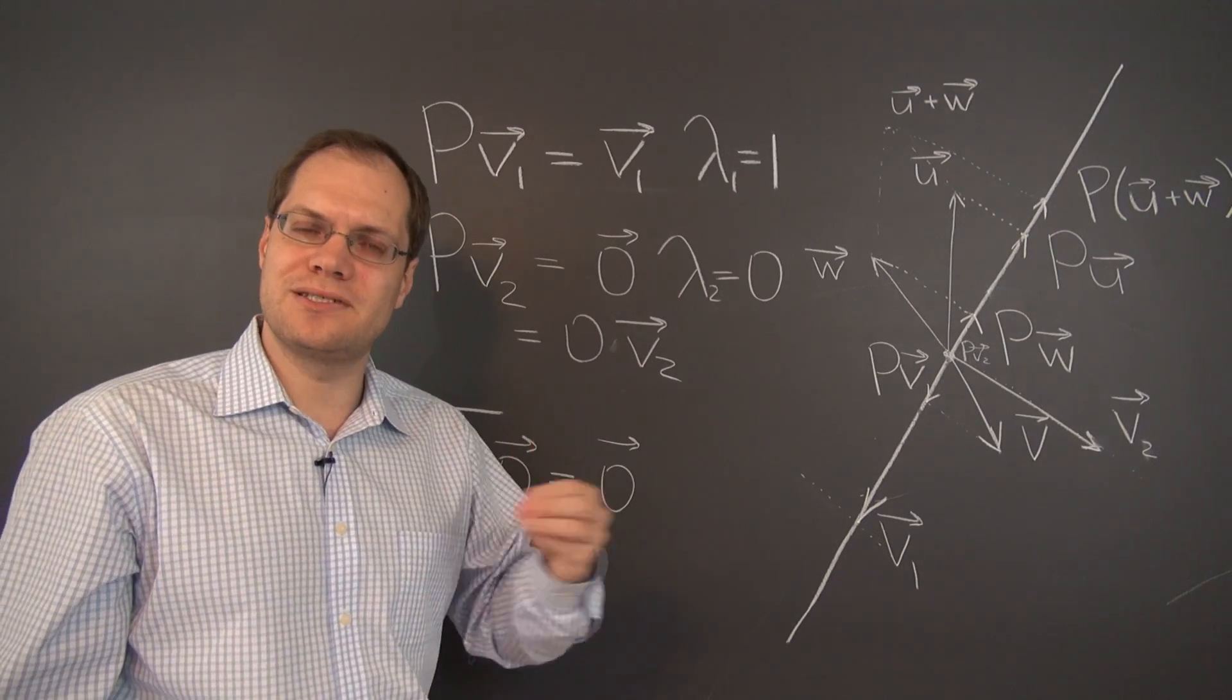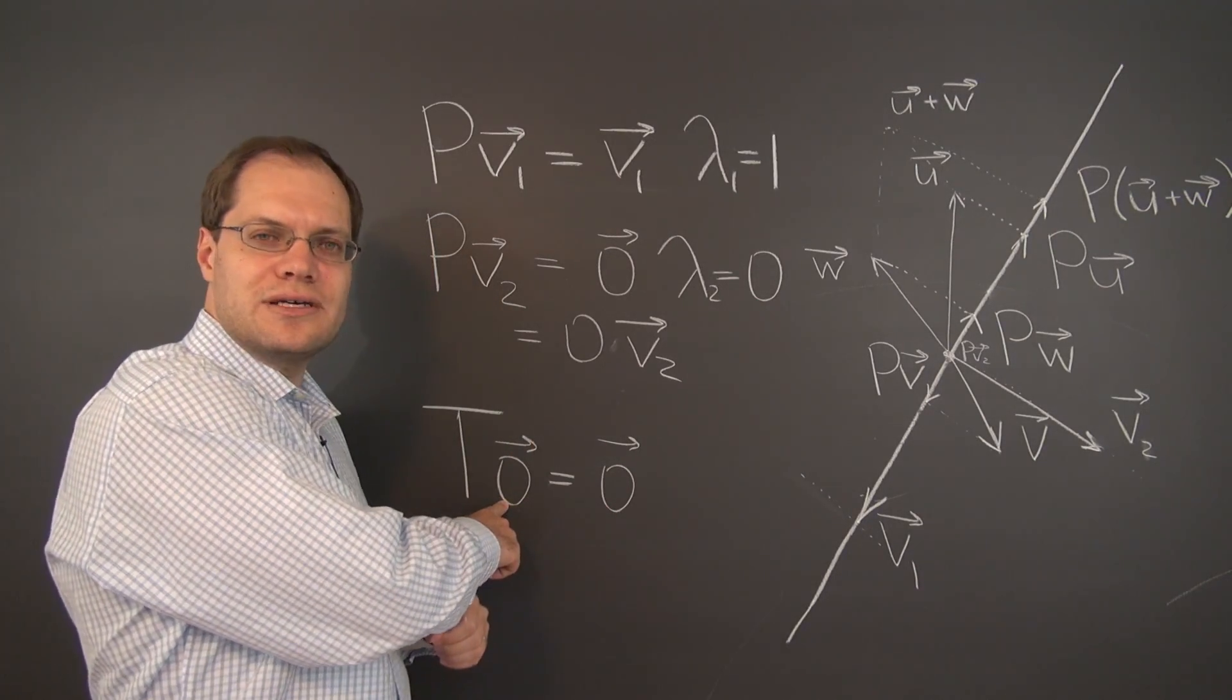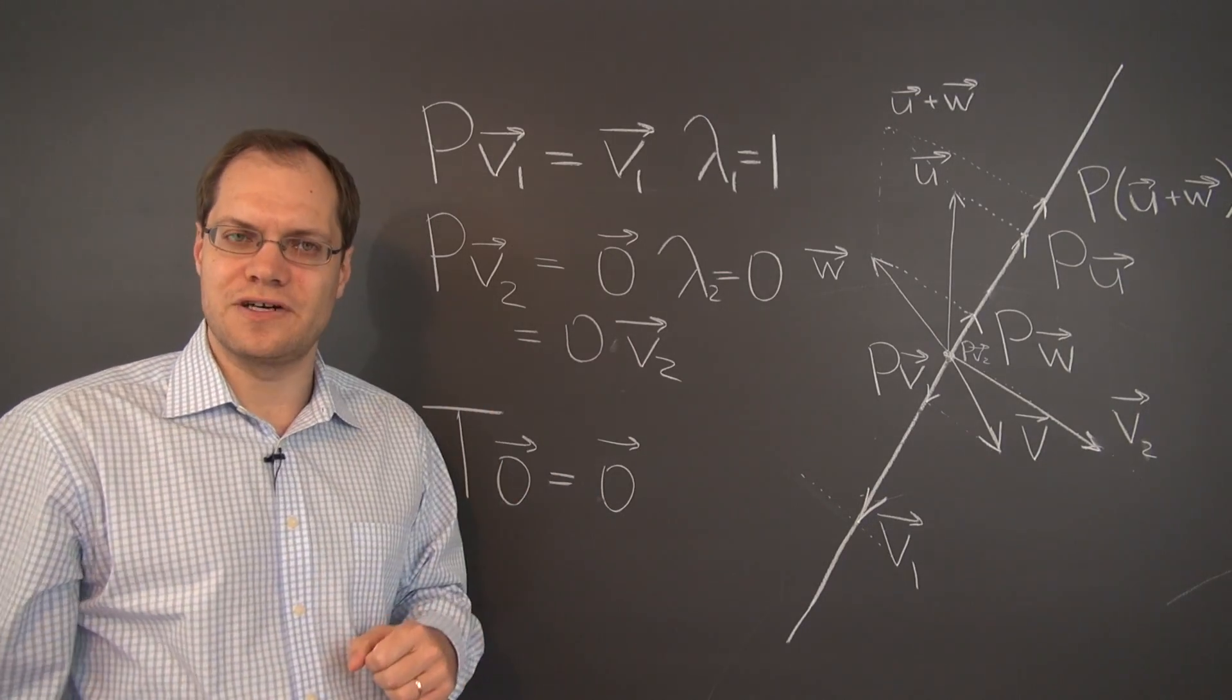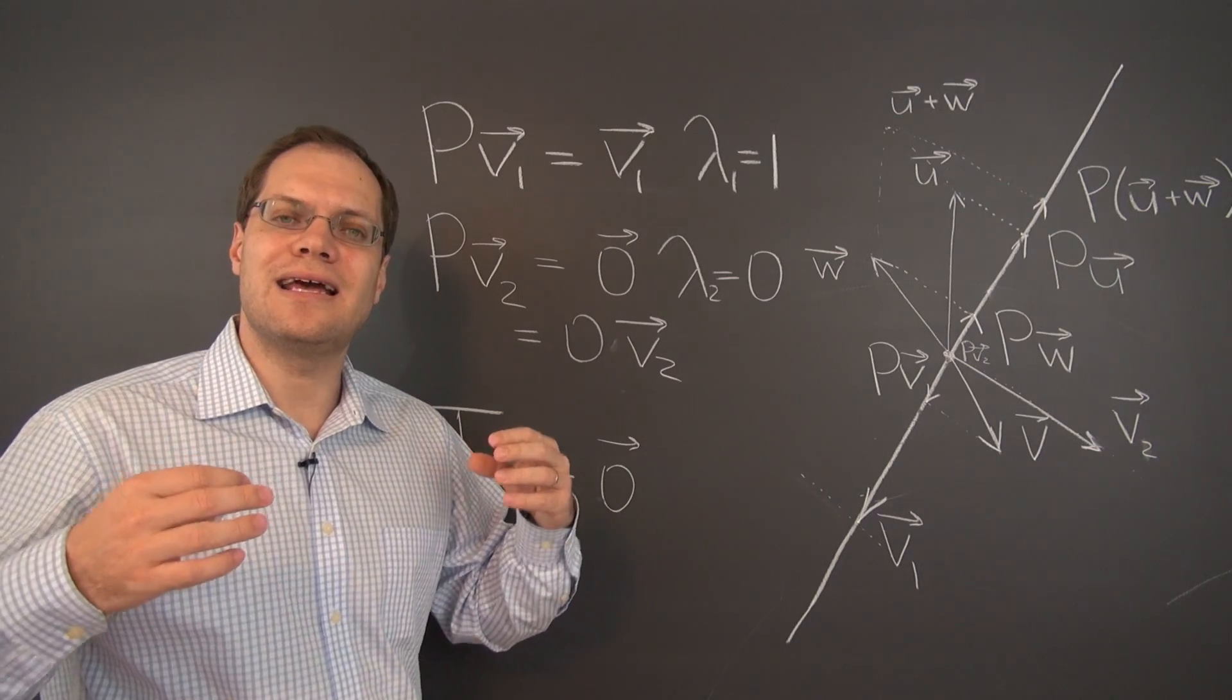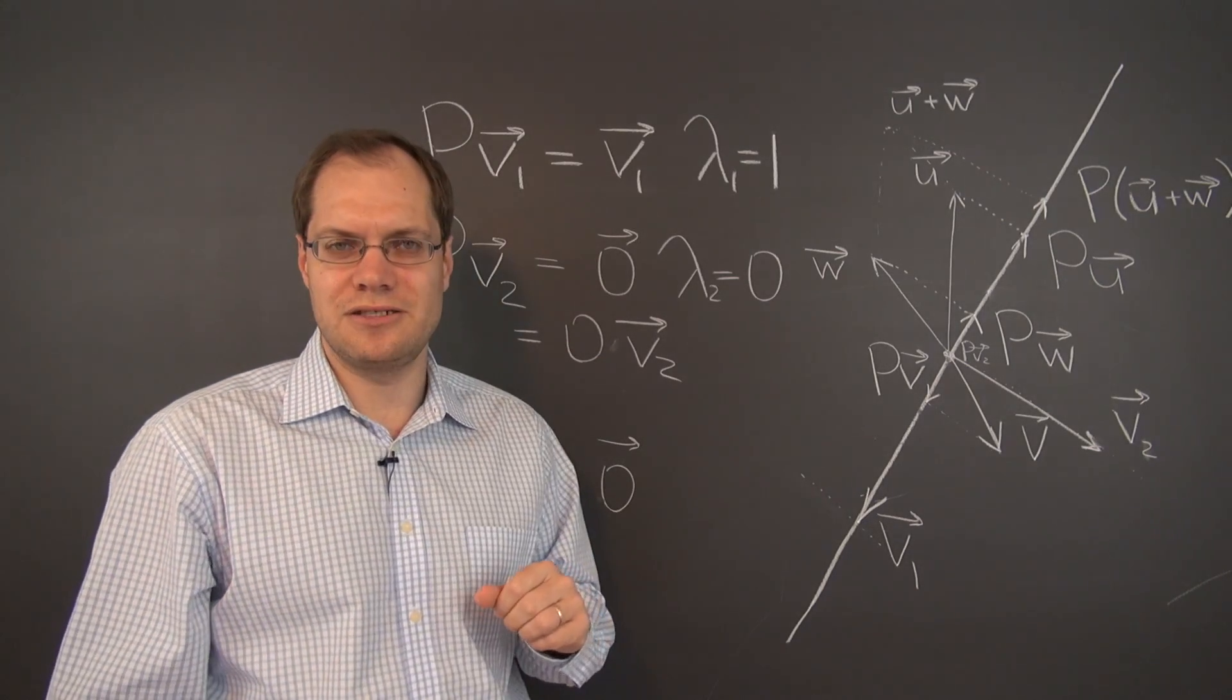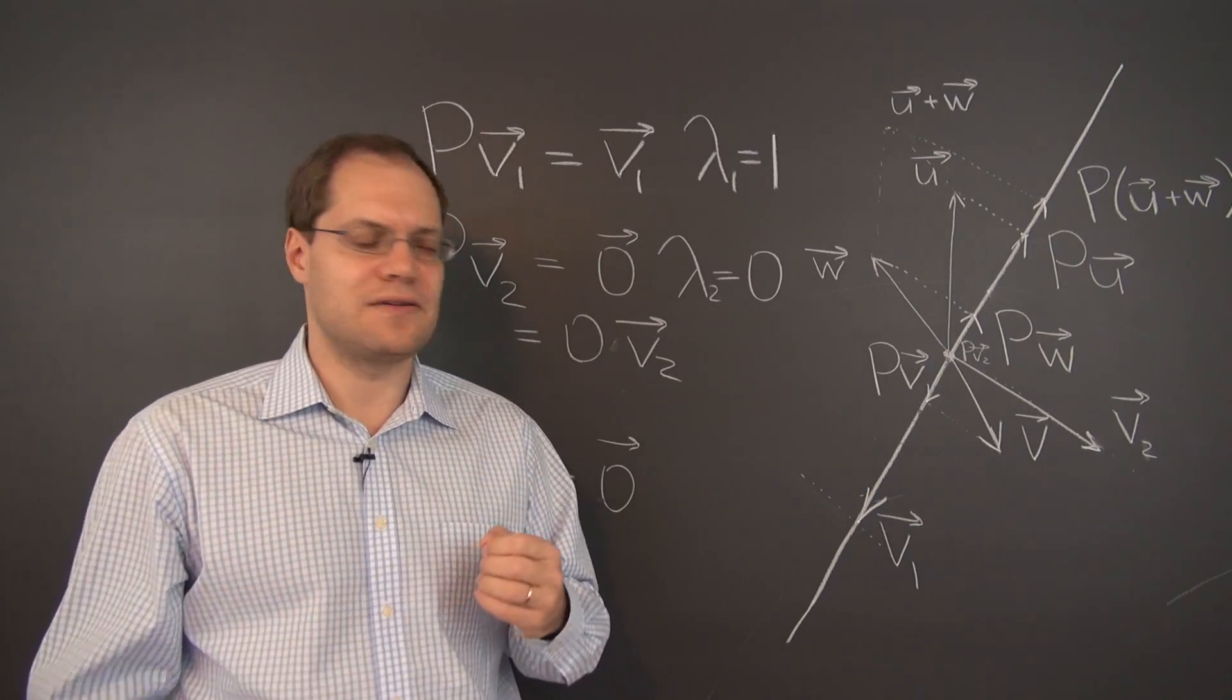So we're never interested for a particular linear transformation. What the image of zero is. Because we know what the image of the zero vector is. It's the zero vector. It's not telling us anything. It's not anything interesting, specific to the transformation. So the zero vector is never considered an eigenvector.